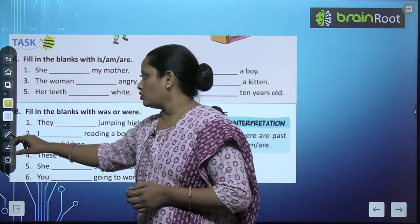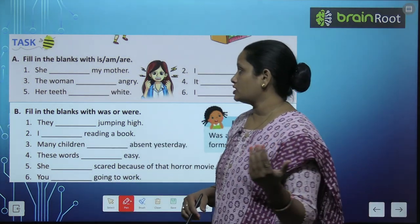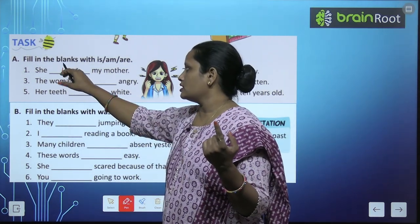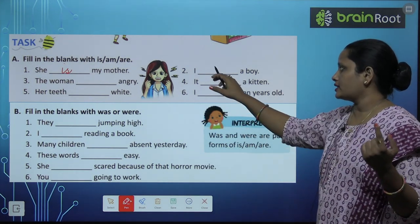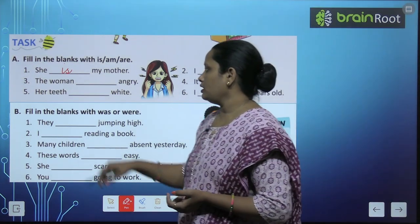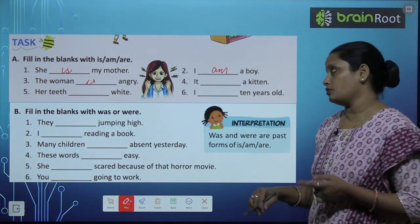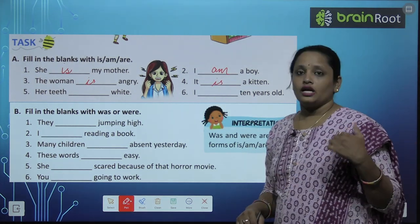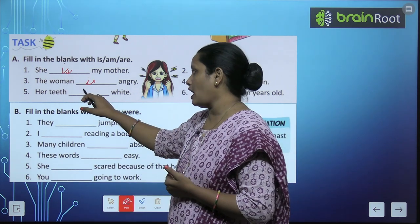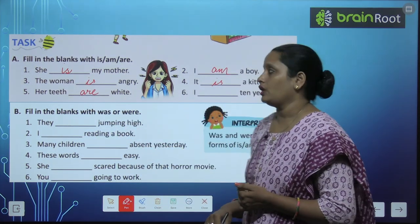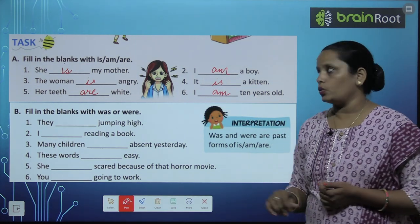Exercise A: Fill in the blanks with is, am, or are. First: 'She dash my mother' — she मतलब one, it will be 'is'. She is my mother. Second: 'I dash a boy' — I के साथ हम लगाते हैं am. I am a boy. Third: 'The woman dash angry' — कितनी women? One, so is. The woman is angry. Fourth: 'It is a kitten' — it means one, so is. Fifth: 'Her teeth dash white' — बहुत सारे teeth, so are. Her teeth are white. Sixth: 'I am 10 years old'.